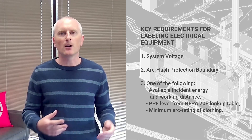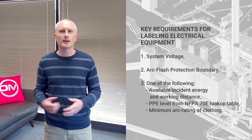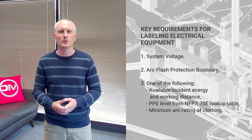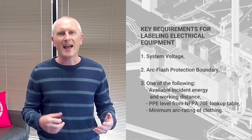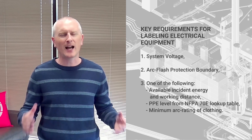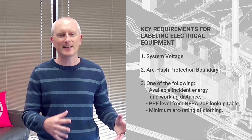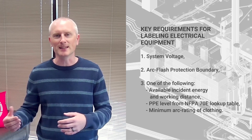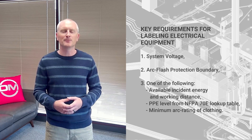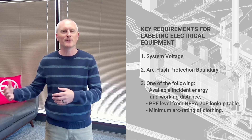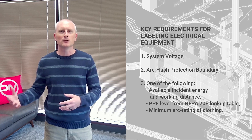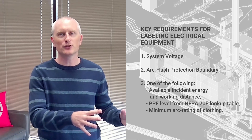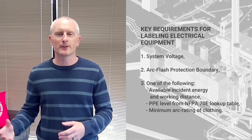You can also include the minimum arc rating of the clothing. Arc rating is a value in calories per centimeter squared, and you include the minimum value required to work on that piece of equipment. All PPE levels for clothing have a minimum arc rating as well, so this is correlated to PPE rating but not exactly the same thing — it should be the minimum arc rating in cal/cm², not just a PPE number. Finally, there is the site-specific level of PPE, usually taken from the facility's electrical equipment safety manual. You need one or more of those three: incident energy, PPE level, or arc rating for the clothing.